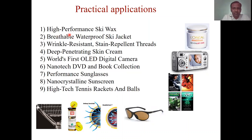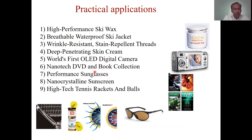Some market-available nanotechnology products include: high-performance ski wax, pressurizable waterproof ski jackets, wrinkle-resistant or stain-repellent fabric, deep-penetrating sunscreen creams, OLED digital cameras, nanotech DVD and book collections, performance sunglasses, nanocrystalline sunscreen, and high-tech tennis rackets and balls. A few of them we will discuss here.